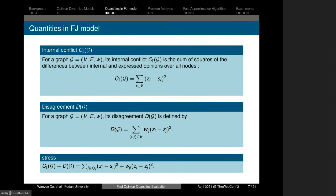The difference between expressed opinions for each pair is measured by disagreement D(s). The disagreement is also called external conflict. The stress of a node can be measured by the sum of its internal and external conflicts.